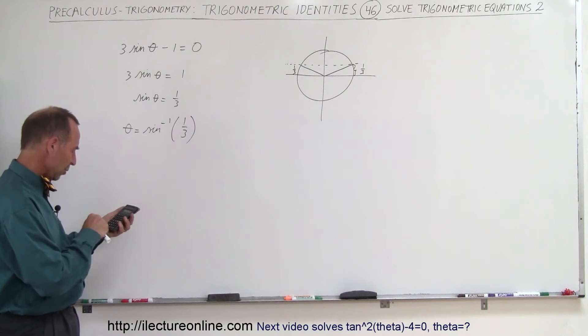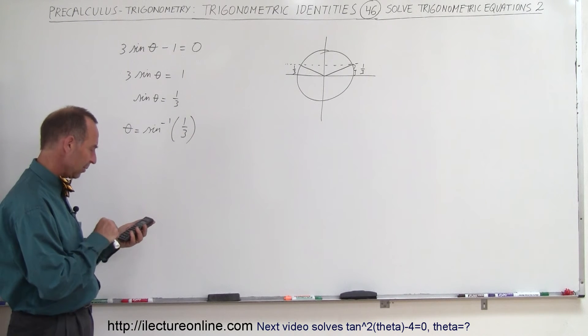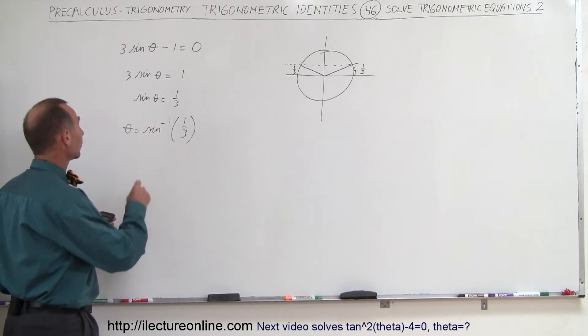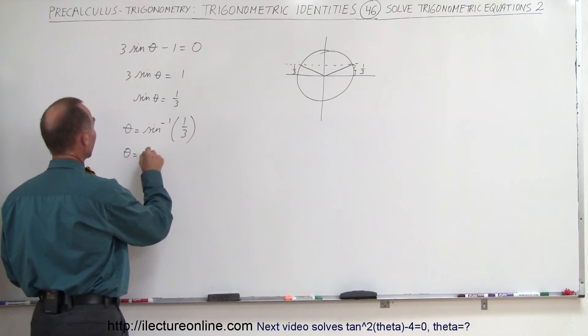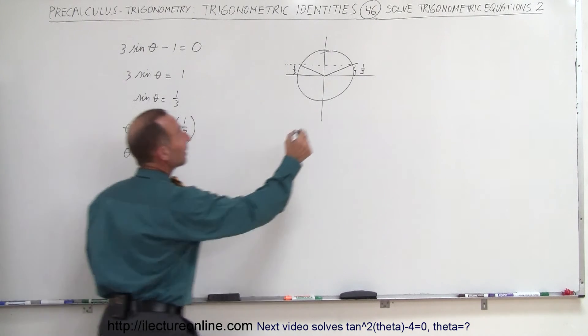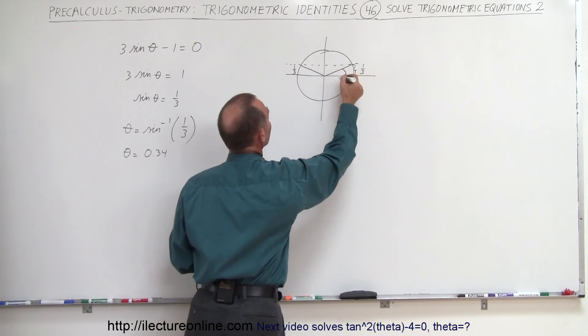But I want to convert that to radians. I have my calculator in radian mode so 1 divided by 3 equals, take the inverse sine of that and it's 0.34 radians. So theta is equal to 0.34 radians. That would be this angle right here.